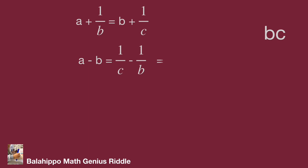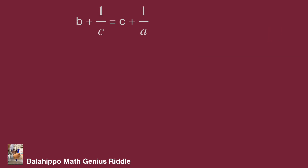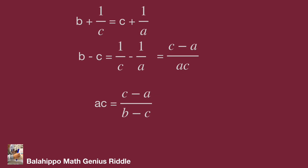Reducing the right side, it becomes B minus C over B times C. So B times C equals B minus C over A minus B. Using the same approach on the second pair of equations, we get A times C equals C minus A over B minus C.